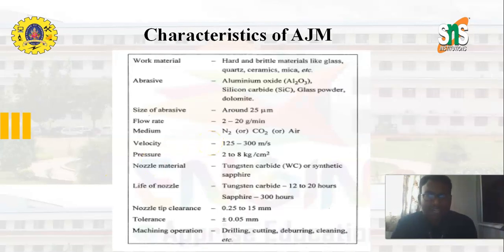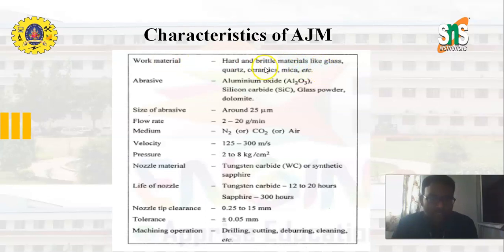These are some of the important characteristics of abrasive jet machining. Work materials used in AJM are hard and brittle materials like glass, quartz, ceramics, mica, etc. Different types of abrasive particles are used in AJM, including aluminum oxide (Al₂O₃), silicon carbide, glass powder, dolomite, etc.